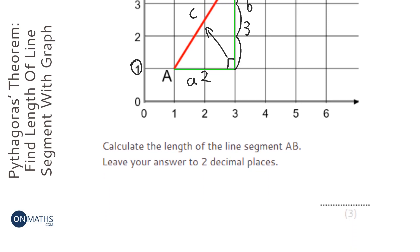We use Pythagoras' formula. So A squared plus B squared equals C squared. And A is two, so two squared plus three squared, because B is three, equals C squared.